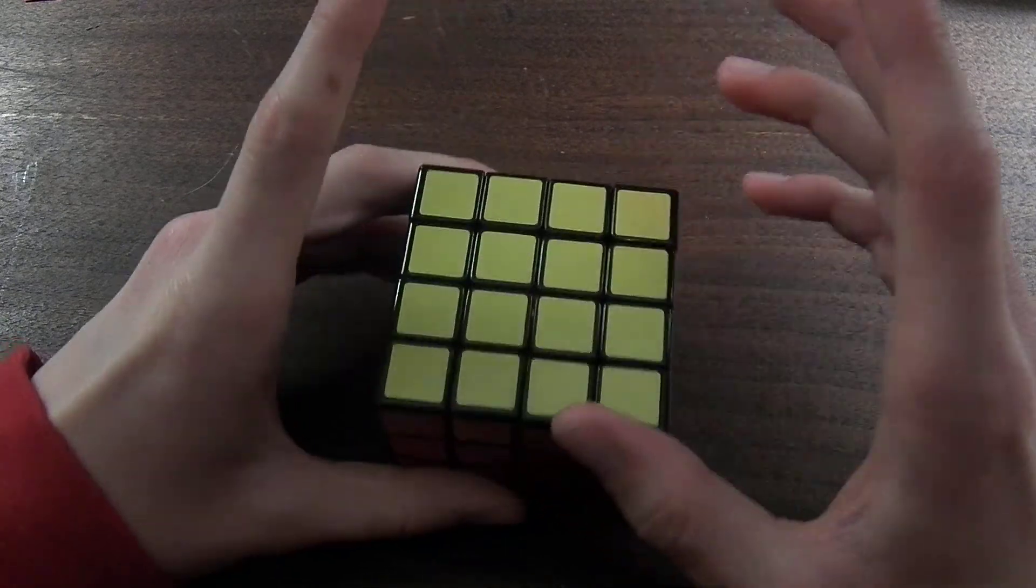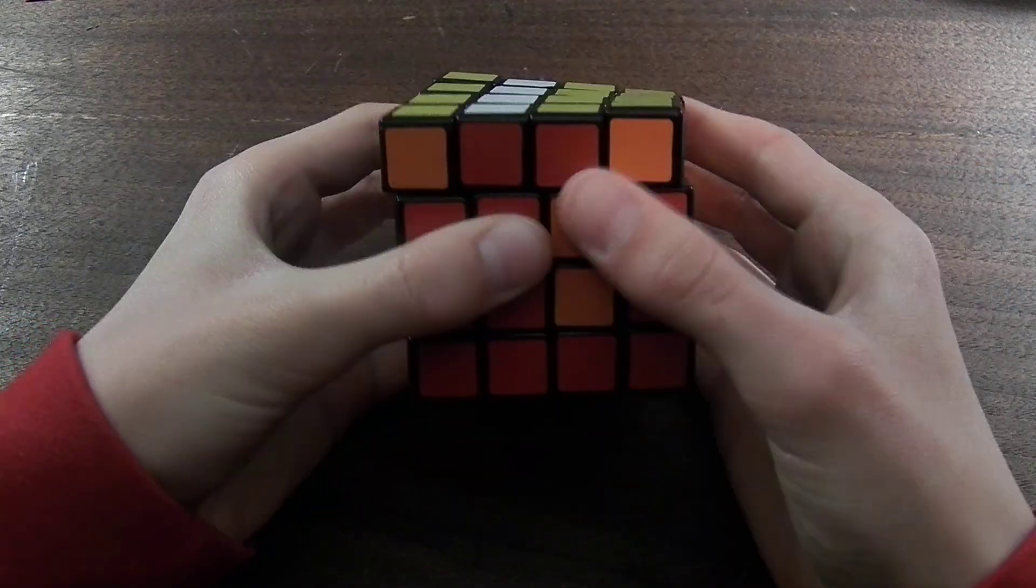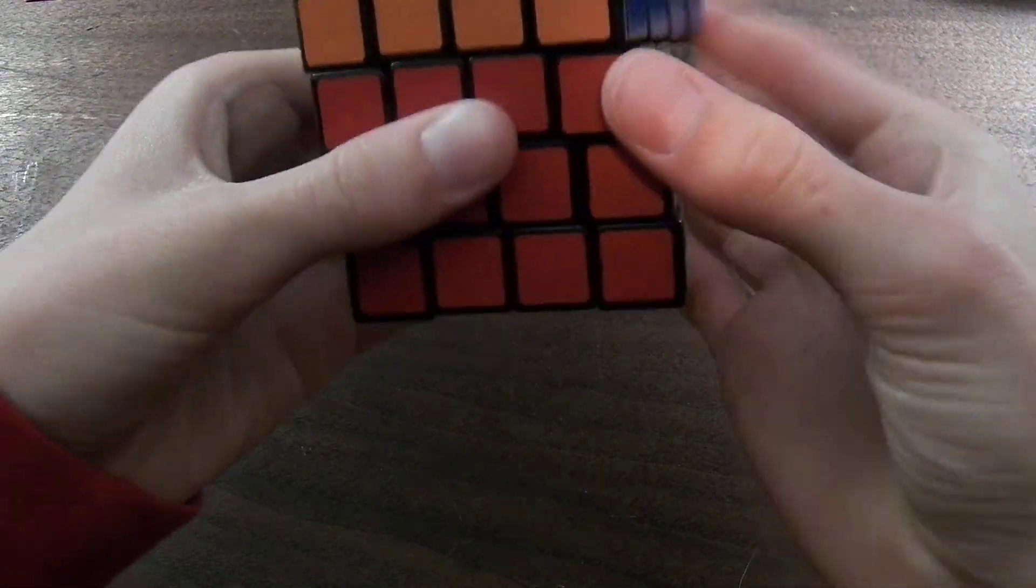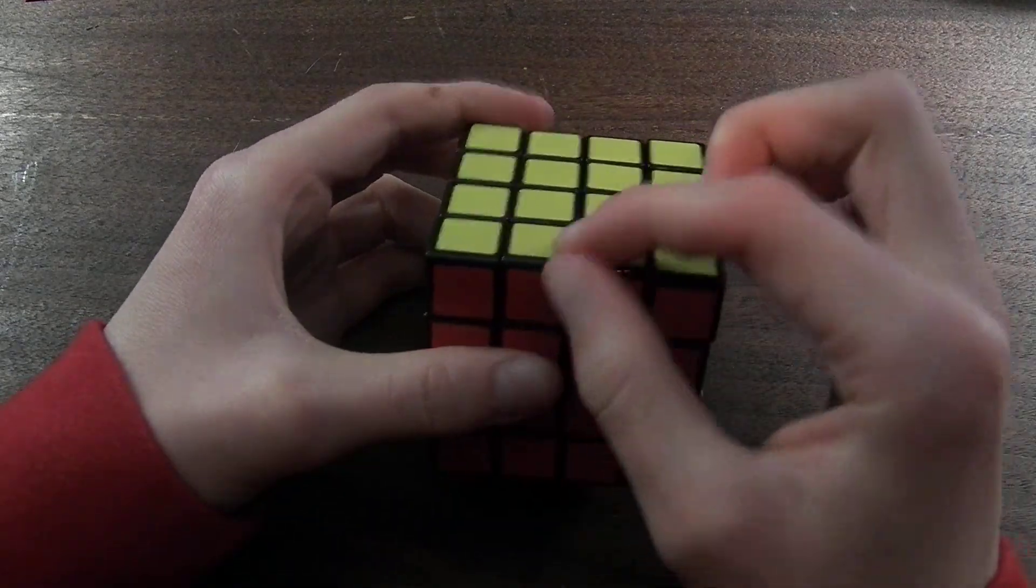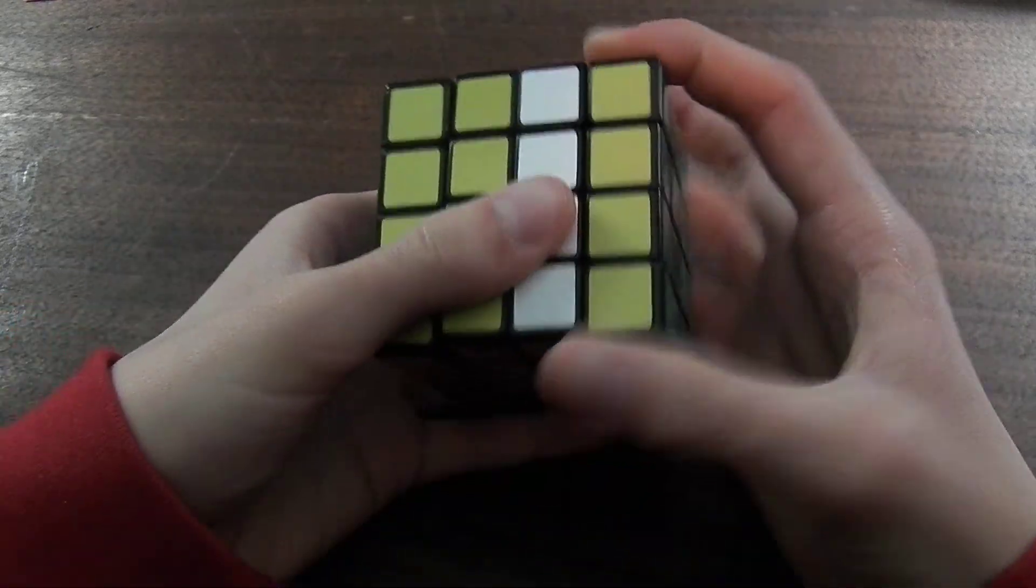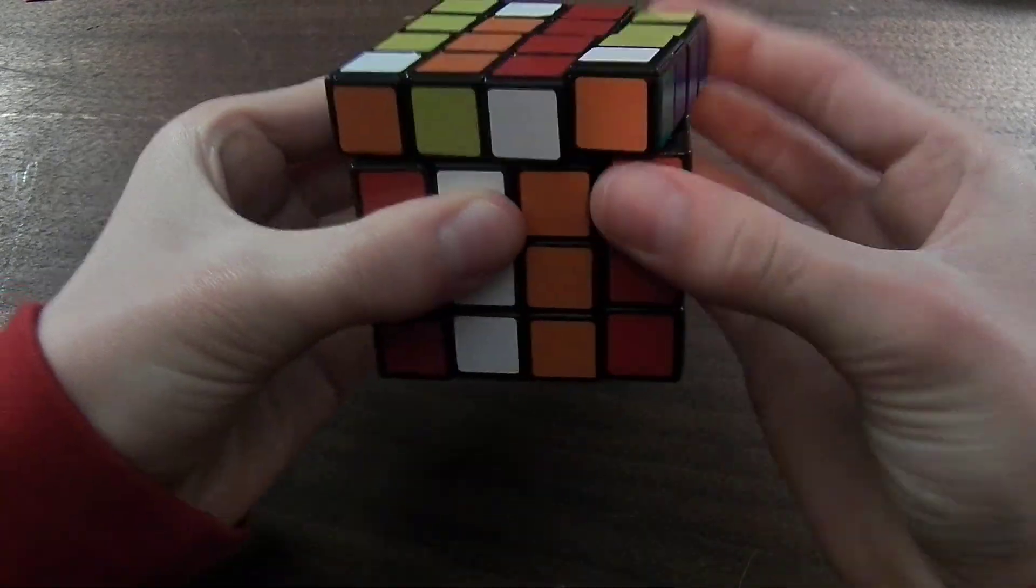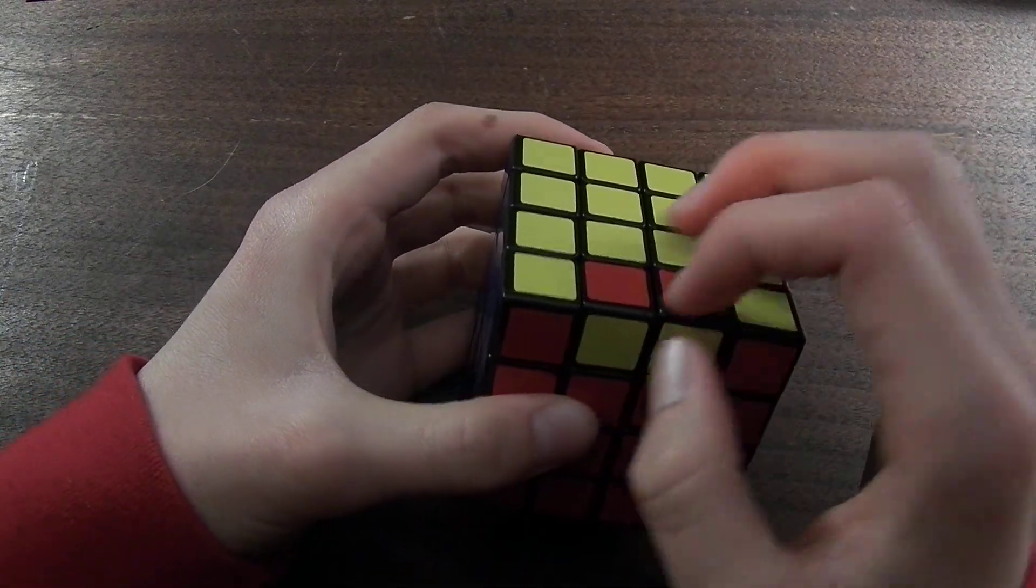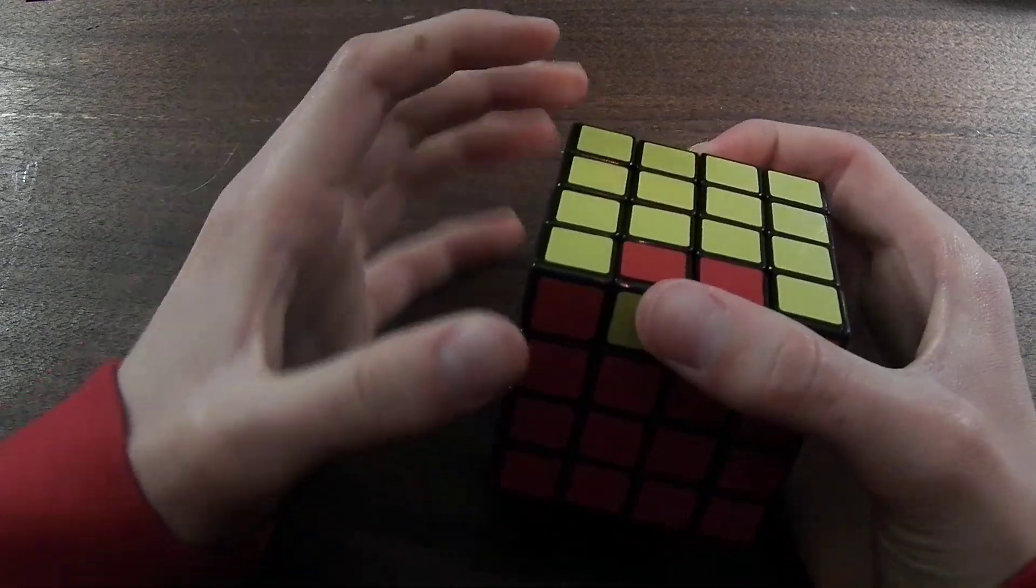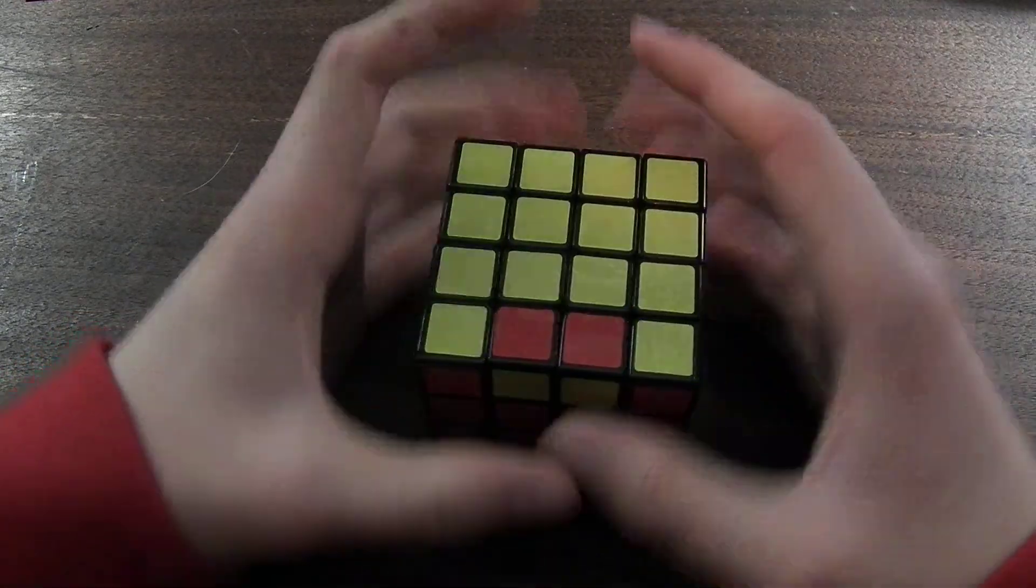First we're going to start on the 4x4. There are two algorithms that I want to show you. The first one I want to show you is one for edge parity. If you have parity like this on your 4x4 after you've solved it, then you should use the algorithm that I'm about to teach you. This is called the edge parity, where one edge is flipped around. Here's the algorithm, plain and simple.